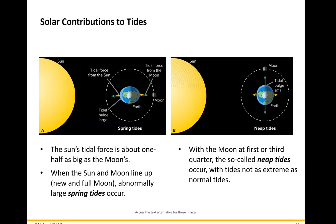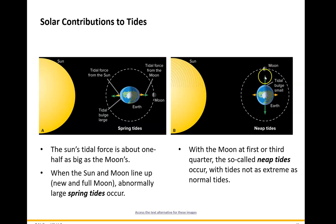With spring tides, the sun is contributing to the tide as much as it's going to. With neap tides, the sun is taking away some of the tidal effect from the moon. So you get the lowest high tides and the highest low tides. High tide always follows the moon, so there's a high tide; six hours later you get a low tide, but it's not going to be quite as low as normal — it'll be the highest low tide you're going to get, and the high tide is the lowest high tide.